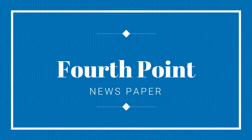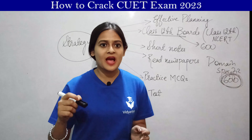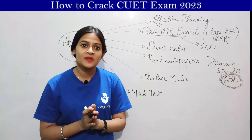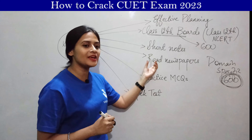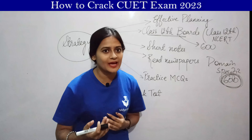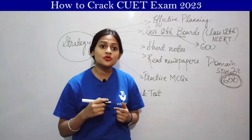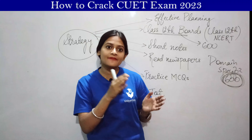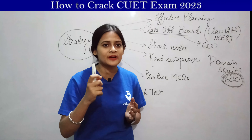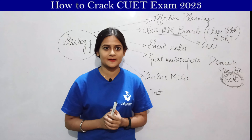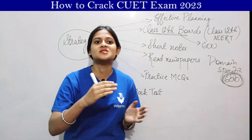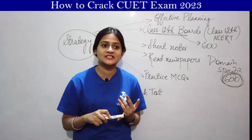The fourth point is reading newspapers. In the language test, whatever language you have opted for, read that language's newspaper daily. For example, if you have opted for English, please read English newspapers daily. You will get three benefits: first, your reading ability will enhance; second, your vocabulary will improve — and these two will help in your language test because reading comprehension has to be solved in short time, and antonyms or synonyms you can easily tackle. The third bonus is that if you read the newspaper for the last six months, your current affairs will be prepared.